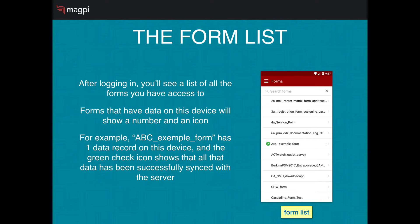Once you log in, you'll see a list of all the Magpie forms that you have access to — forms that you've created or forms that other people have shared with you. If you have data on this device in any form, you'll see an icon and a number. For example, in the image at right, you'll see that the ABC example form has a single data record on the device, and the green check icon shows you that that single record has already been successfully synchronized with the Magpie server.